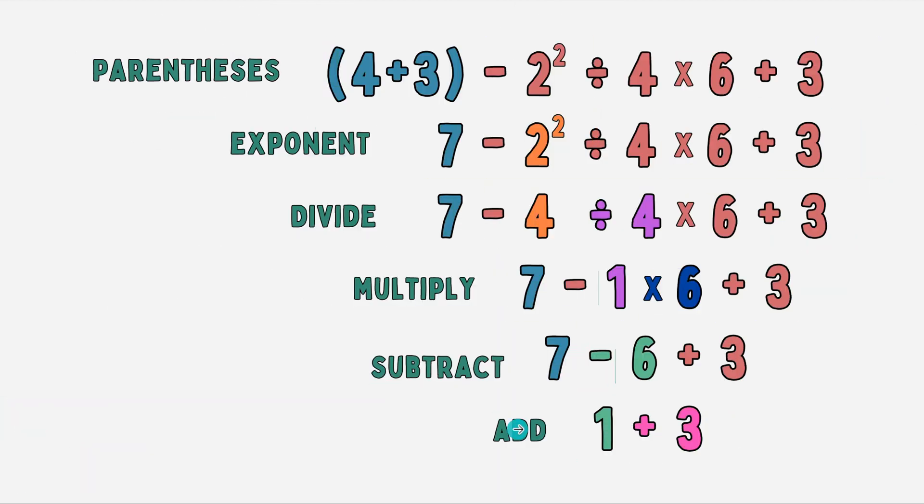Let's take a look at what I mean. This is the first step that we completed: 4 plus 3 in our parentheses became a 7, then everything else, as you can see, is exactly the same. All I did was bring it down. That helps me visualize what comes next. Now I solve the exponent. The exponent then becomes a 4.